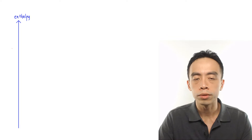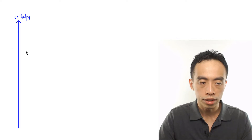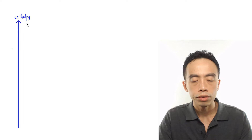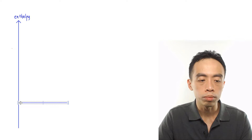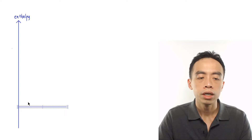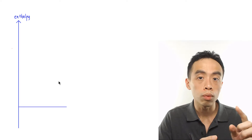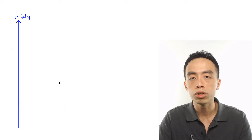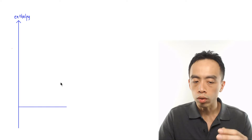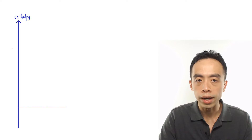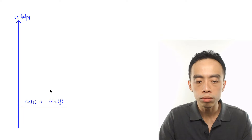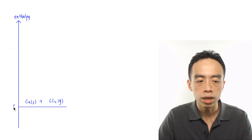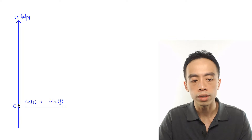Let's use calcium chloride as an example. The y-axis represents enthalpy. The first term I usually draw is the elements in the standard state. I'll put the elements close to the bottom because later I just need to draw one arrow pointing down for the enthalpy change of formation. So the elements are calcium solid and Cl₂ gas. Because these are elements in the standard state, we label the enthalpy value as zero.